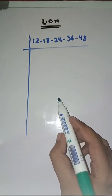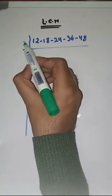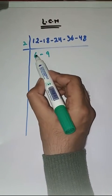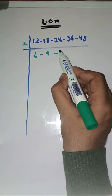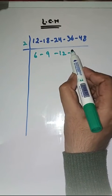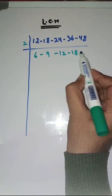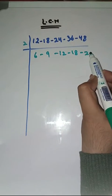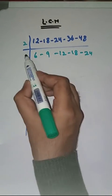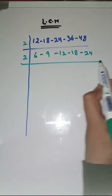So we start with 2. 2 6s are 12, 2 9s are 18, 2 12s are 24, 2 18s are 36, 2 24s are 48.